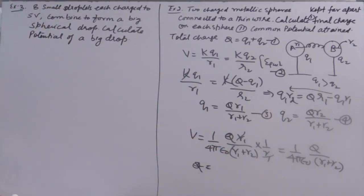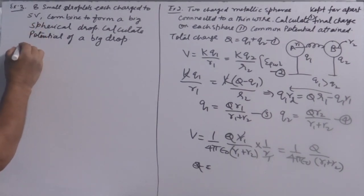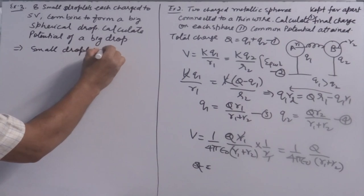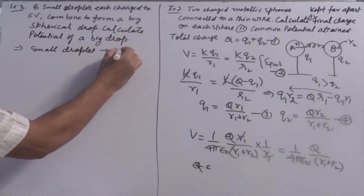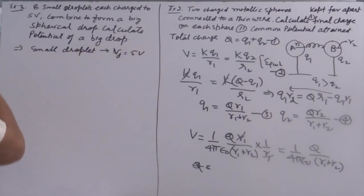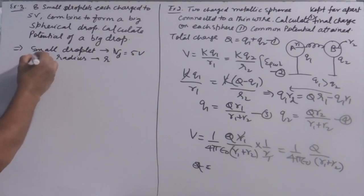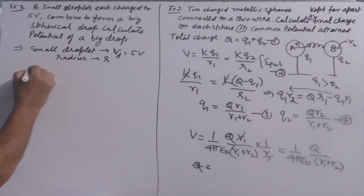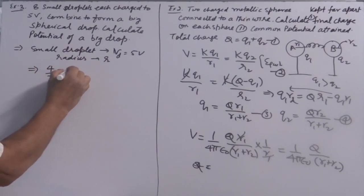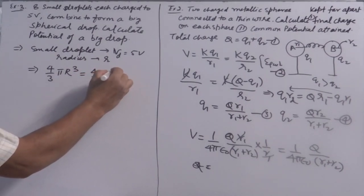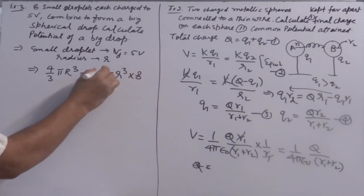Let's move to the next question. Eight small droplets, each charged to a potential of 5 volts and radius r, are combined to form one big drop. From conservation of volume: (4/3)πR³ = 8 × (4/3)πr³, which gives R = 2r.